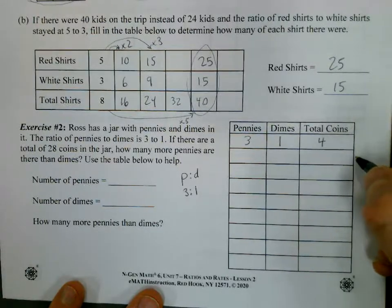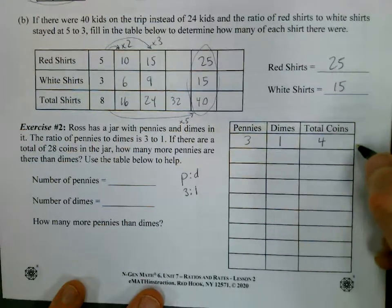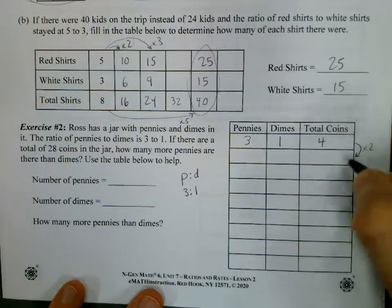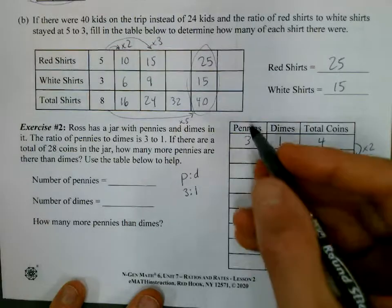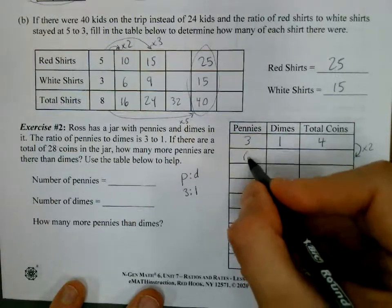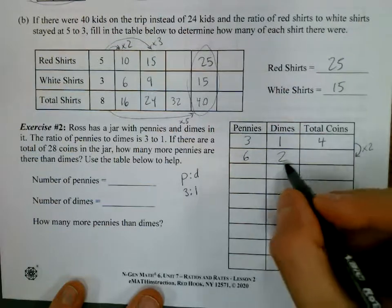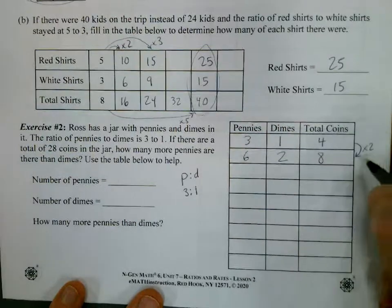And now every time we go to a new row, it's going to be a multiple of some other row. So let's do a times two to get to the second one. So fill this out. We're going to just double all of these numbers. So three times two, we have six pennies, two dimes, and six plus two is eight. You could do four times two, or you could simply add these and say, hey, that's eight.